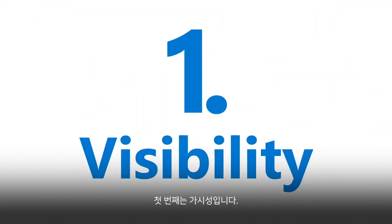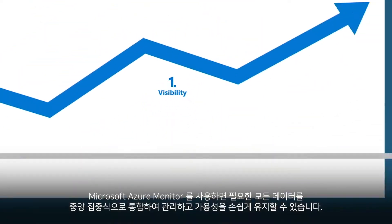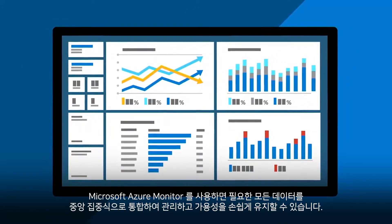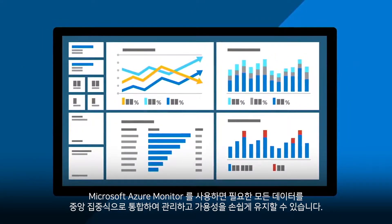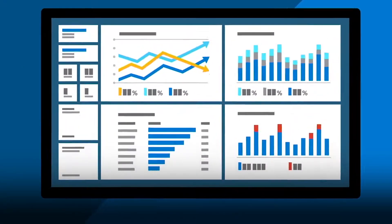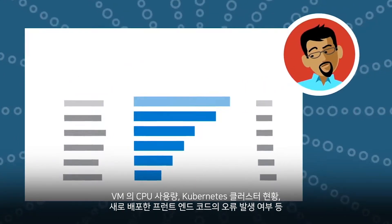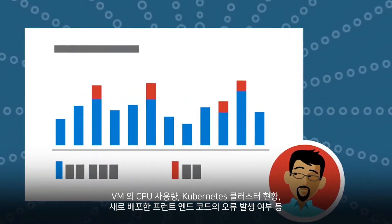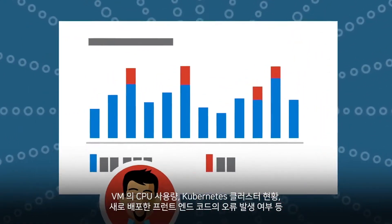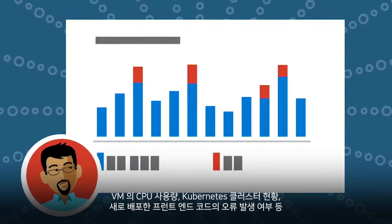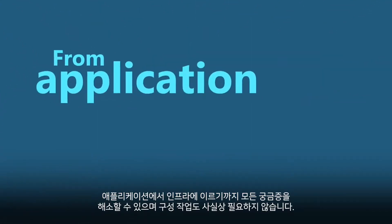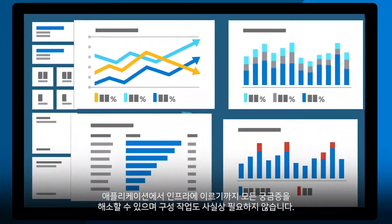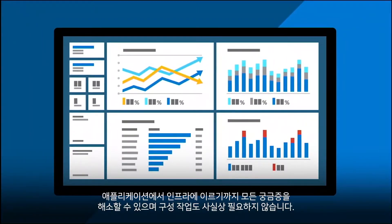First, visibility. We make sure you have all the data you need, centralized, consolidated, and available at your fingertips. What is the CPU usage on my VM? How is my Kubernetes cluster doing? Is my newly deployed front-end code throwing an error? From application to infrastructure, you get the answers you need with little to no configuration.